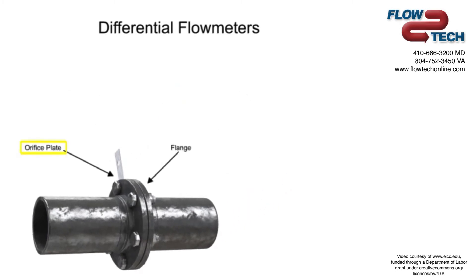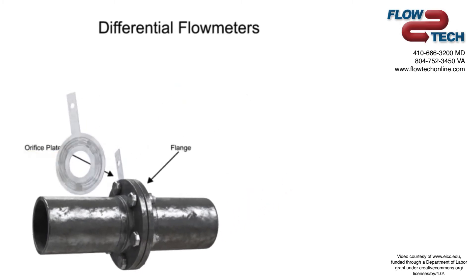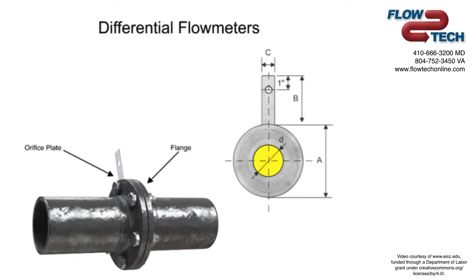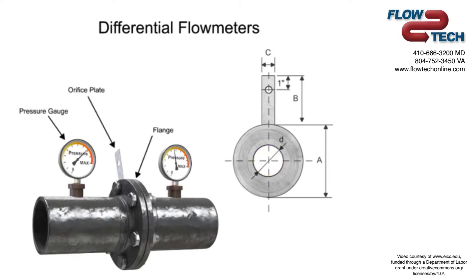The orifice plate of the flow meter is comprised of a circular metal disc with a specific hole diameter that reduces the fluid flow in the pipe. Pressure taps are added on each side of the orifice plate to measure the pressure differential.